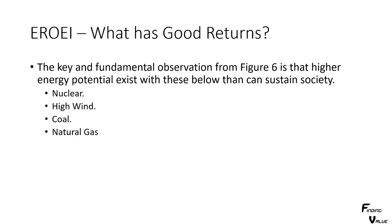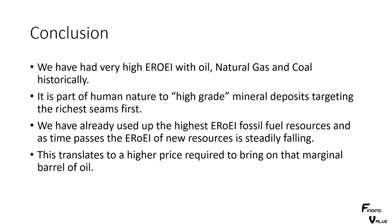The key observation here is that higher energy potentials exist above that threshold that can sustain society. The energy sources that can sustain an advanced society right now are nuclear, high wind, coal, and natural gas. A lot more further development needs to happen with solar panels and other renewables. There are also renewables that perform well, such as water and hydroelectric power.